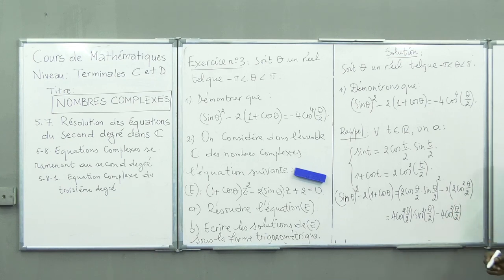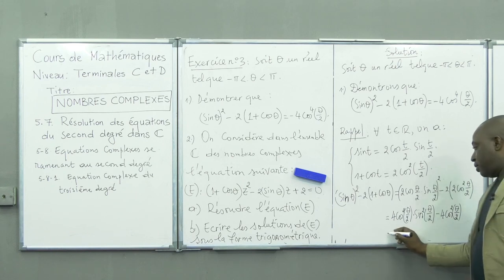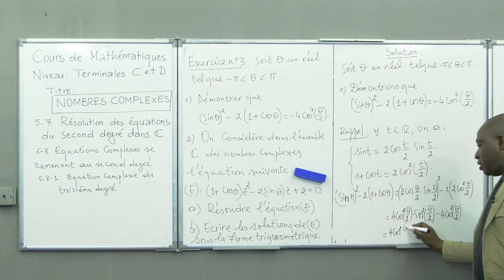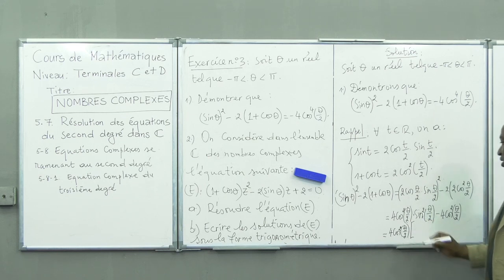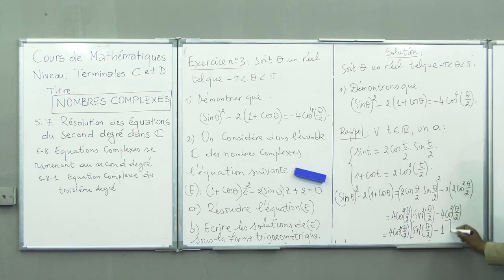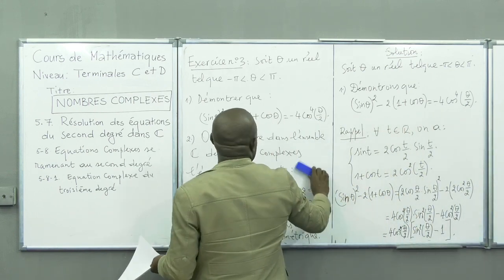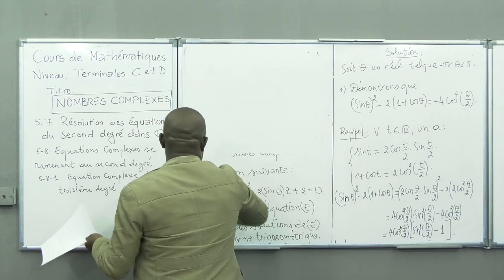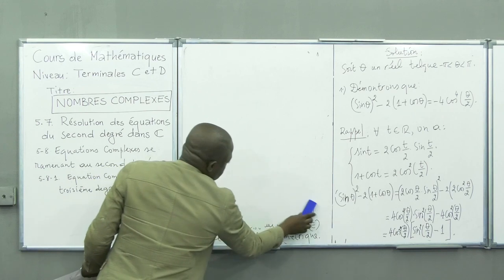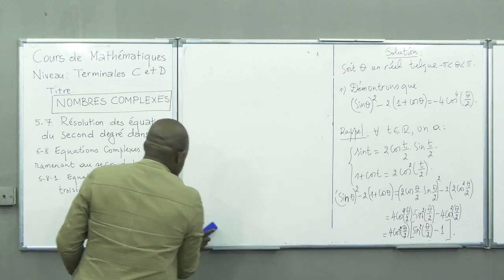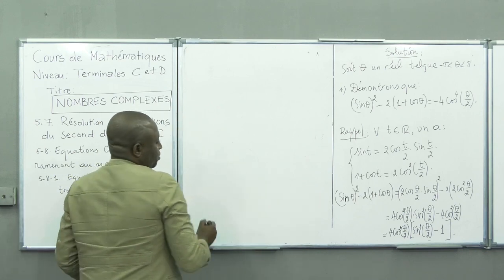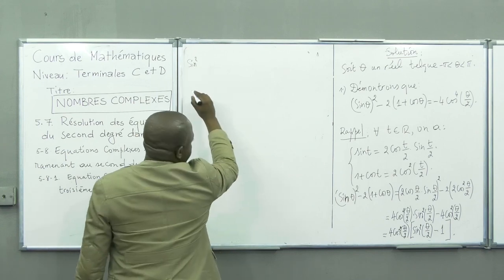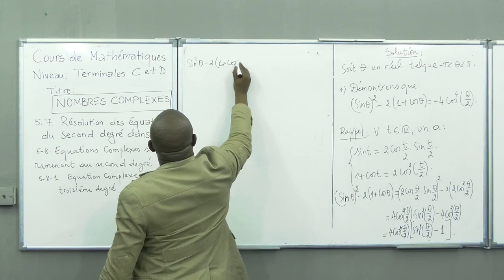On peut mettre 4cos²(θ/2) en facteur. Il restera sin²(θ/2) - 1. Nous avons la relation fondamentale de la trigonométrie : cos²T + sin²T = 1, donc sin²(θ/2) - 1 = -cos²(θ/2). Ainsi, sin²θ - 2(1 + cosθ) = 4cos²(θ/2)·(-cos²(θ/2)).